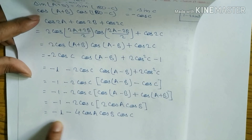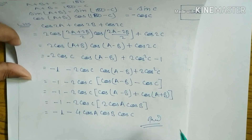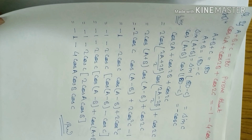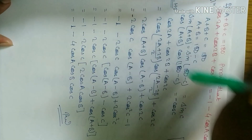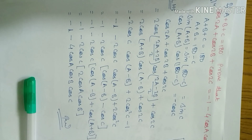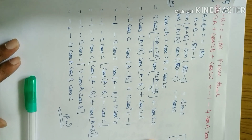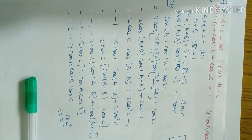So the RHS is proved: minus 1 minus 4 cos A cos B cos C. Hope you understand. I will upload another question on thumbnail 2. If you are new please subscribe, like, comment, and especially share with your friends — spread the knowledge. Thanks for watching my video.